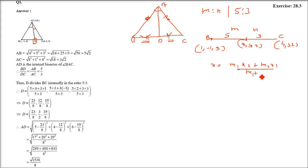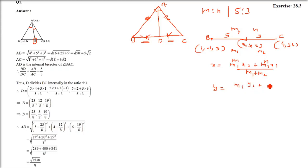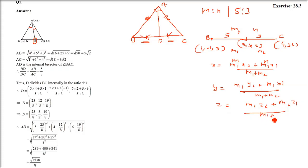So let me write the section formula so you remember how to compute the three coordinates of point D. X will be M1 X2 plus M2 X1 divided by M1 plus M2. Y will be M1 Y2 plus M2 Y1 divided by M1 plus M2. Z will be M1 Z2 plus M2 Z1 divided by M1 plus M2.